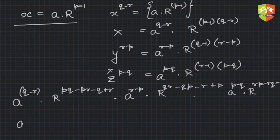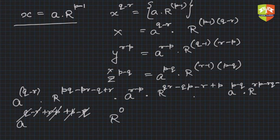All powers of a will get added because it's multiplication. So a to the power (q minus r) plus (r minus p) plus (p minus q). So p and minus p, q and minus q, r and minus r all cancel, so this is a to the power 0. Similarly if you see powers of R it will also come out to be 0.